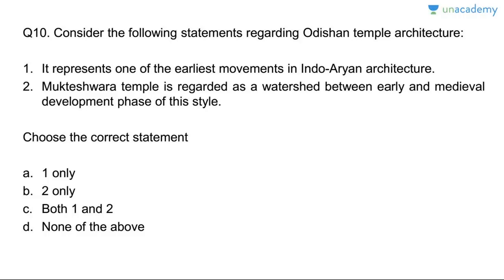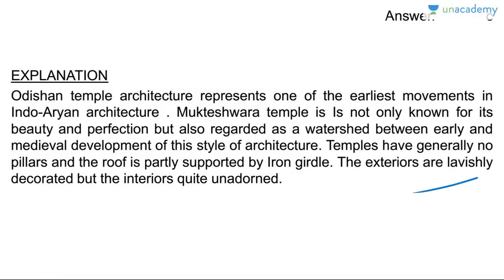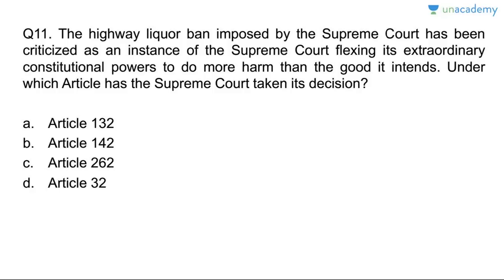Question ten: Odisha temple architecture. It represents one of the earliest movements in Indo-Aryan architecture — correct. Mukteswar temple is regarded as a watershed between early and medieval development phases — also correct. Answer is C, both one and two. Mukteswar temple is known for its beauty and perfection. Odishan temples generally do not have pillars; the roof is partly supported by iron girdles. Exteriors are lavishly decorated but interiors are quite unadorned.